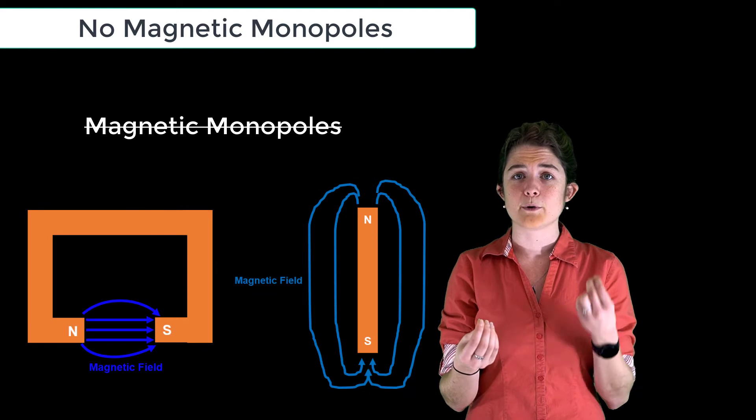This means that magnetic fields always point in circles, going from magnetic north poles to magnetic south poles and back again. This forms a similar external field pattern to an electric dipole, where we have a positive charge and a negative charge close together.